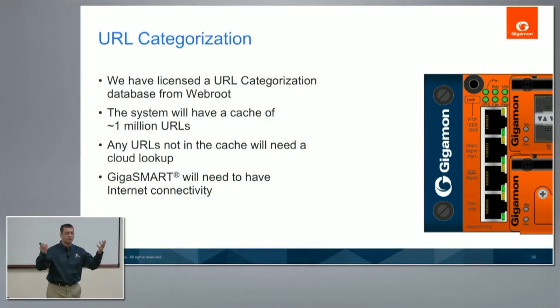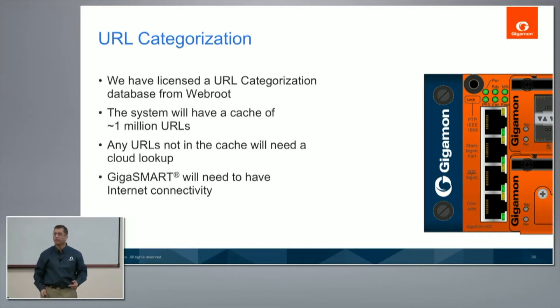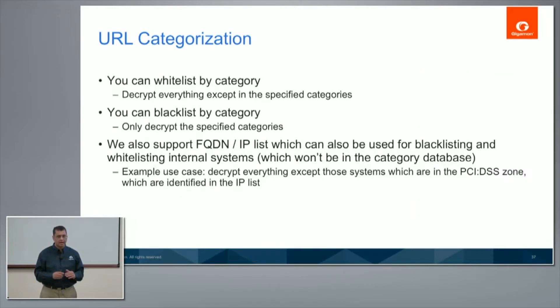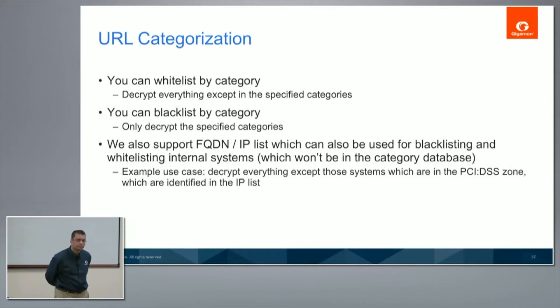The URL database starts with a cache of a million URLs covering popular websites. If a site like Bank of Timbuktu isn't in the local database, we query the internet and get updates. You can whitelist or blacklist by category, and we provide fully qualified domain names as well as IPs. To clarify: whitelisting means bypassing inspection on that traffic, while blacklisting forces decryption regardless of policy.